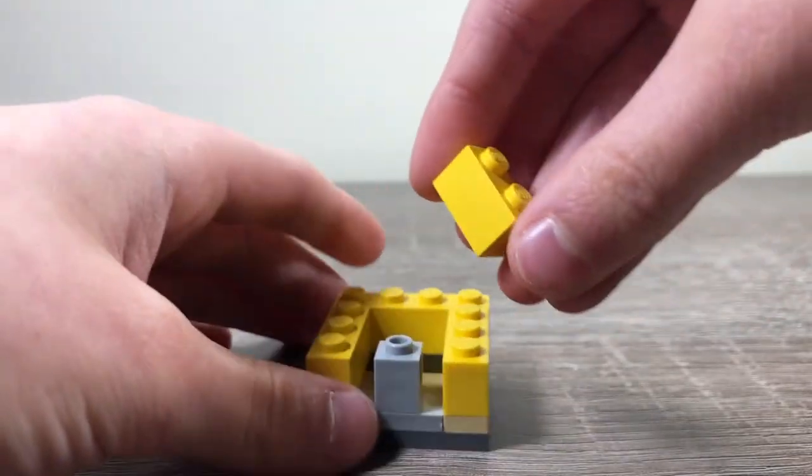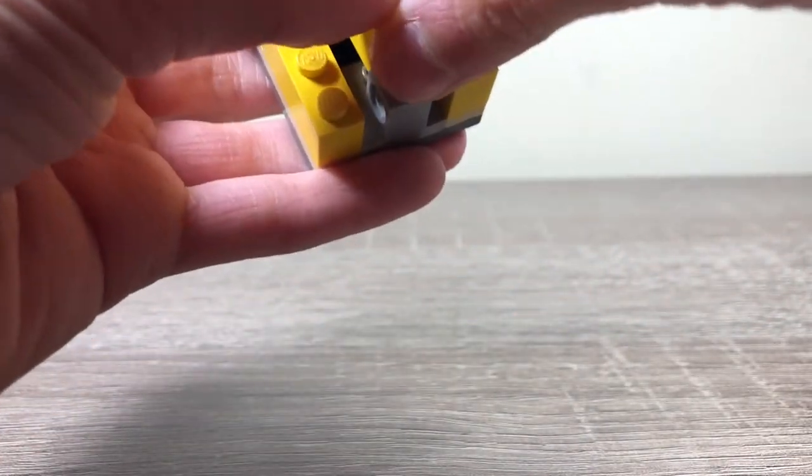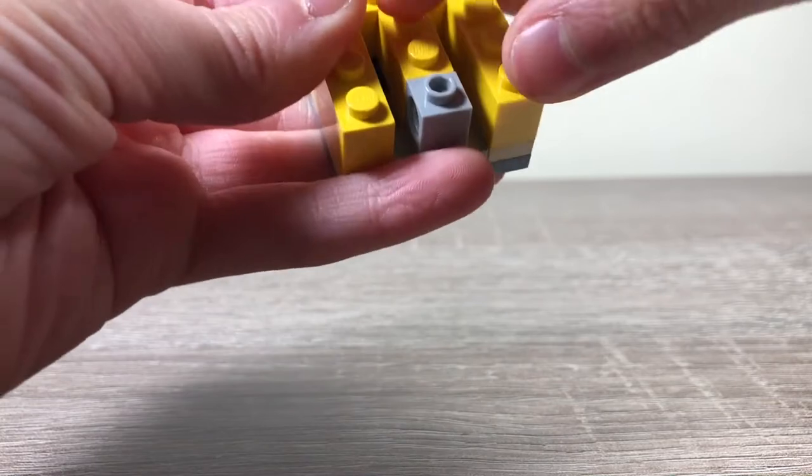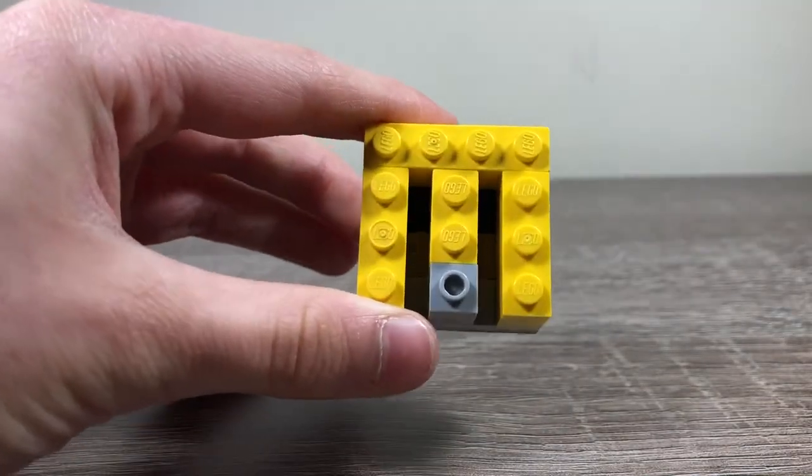Then take a one by two brick and put it on those two jumper plates. And that's the next level.